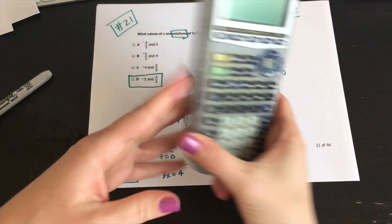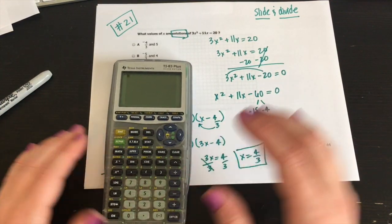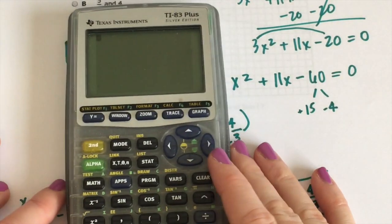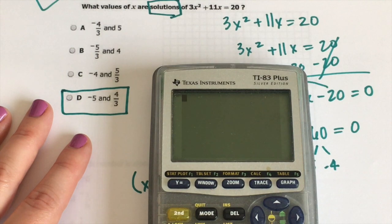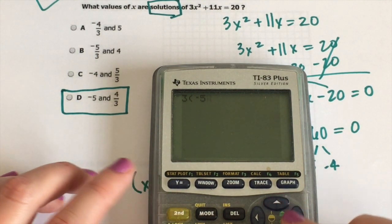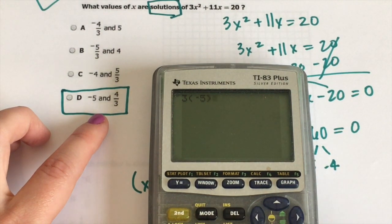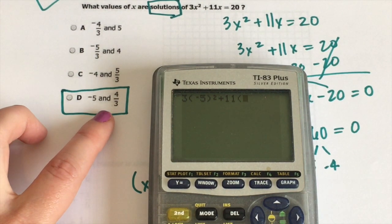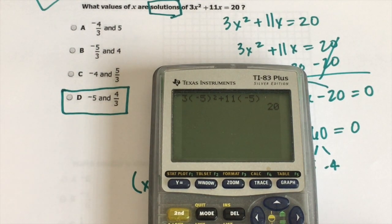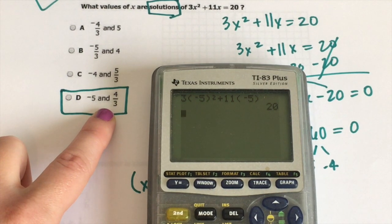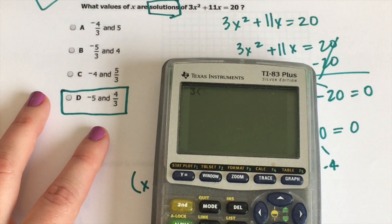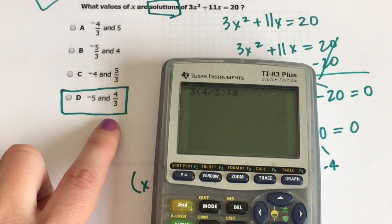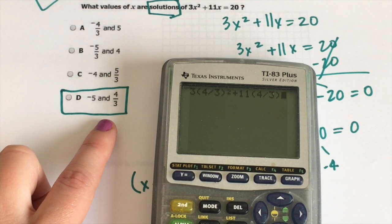You can check this. So let's check it. And I'm going to check it in the calculator. So we do three negative five and squared. That's the wrong squared. Plus 11 negative five. And it should give us 20. Yep. That checks. So you see that one checks. Now, here's the funny part, this fraction. Sometimes the calculator gets confused with fractions. So how you put it in really matters. Four over three squared plus 11, four over three. And that gives us 20 as well. So that checks. That's 21.